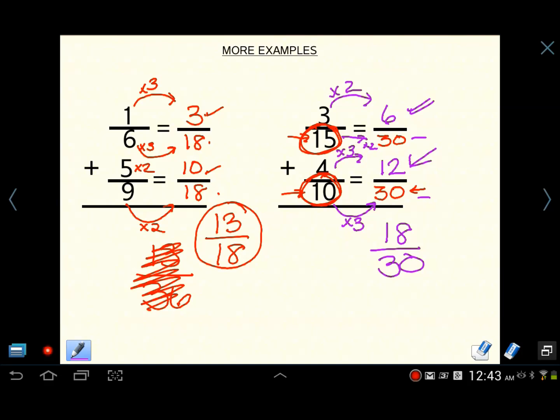And can that reduce? I think it does. We can reduce that by six. Eighteen divided by six and thirty divided by six. When you do that, you get three tenths. There's your answer.